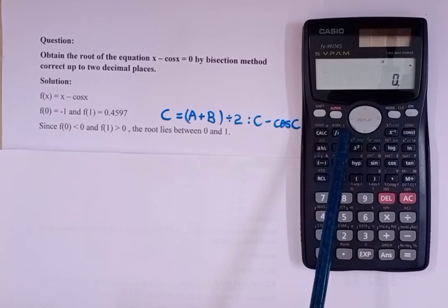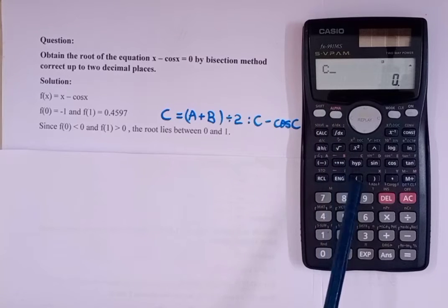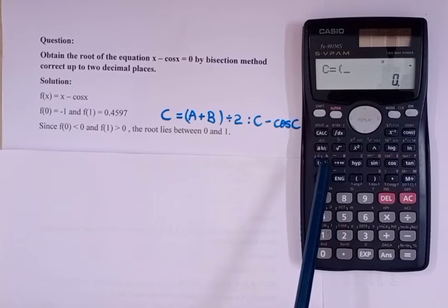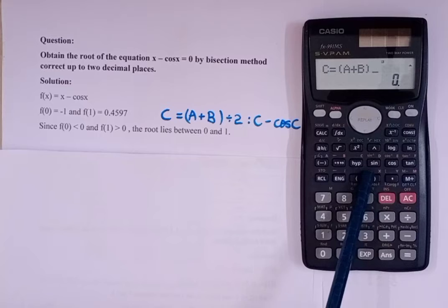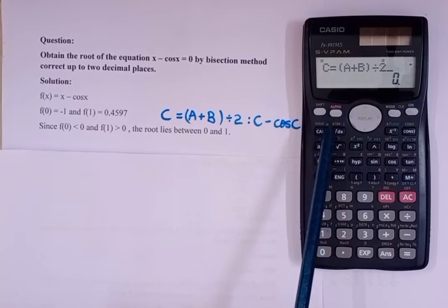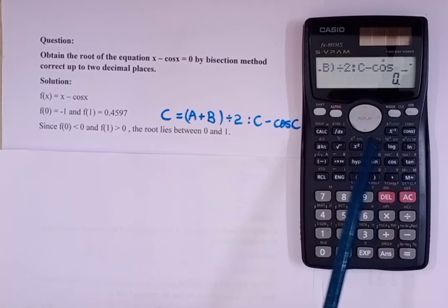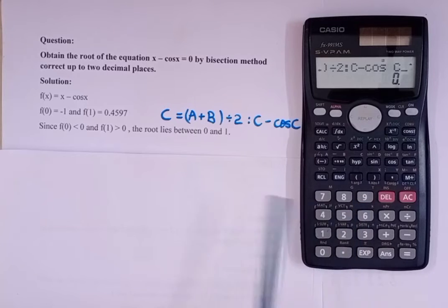This is the programming we'll write in the calculator. Press Alpha Alpha, then C, Alpha C, Alpha Equal to, then bracket Alpha A plus Alpha B, close bracket, divided by 2, then Alpha colon — then Alpha C minus cos Alpha C. This is the programming we have created.